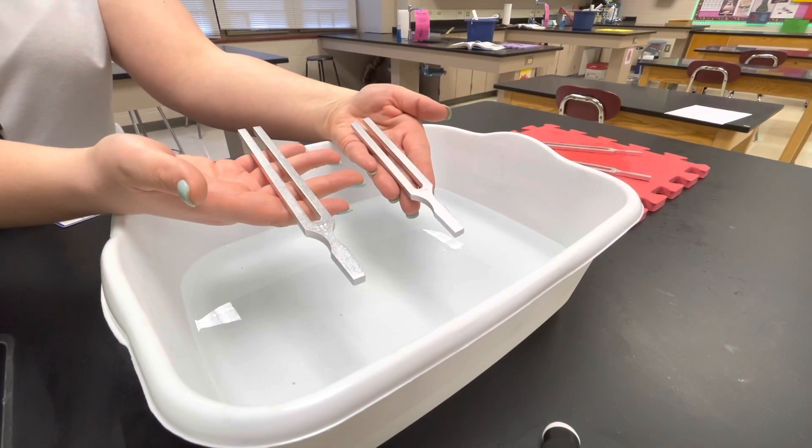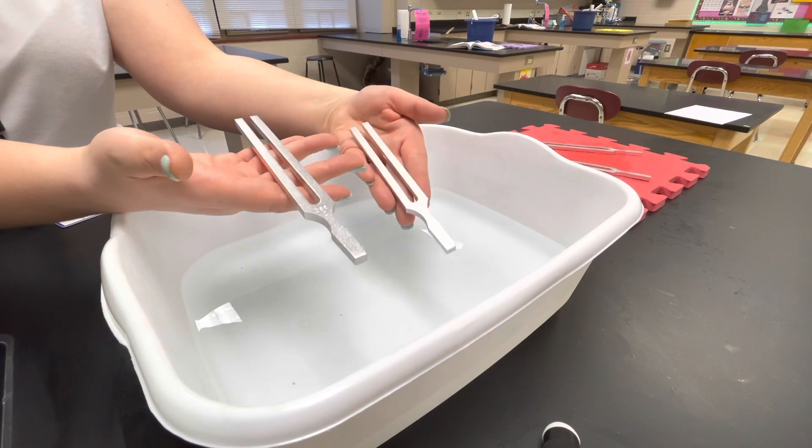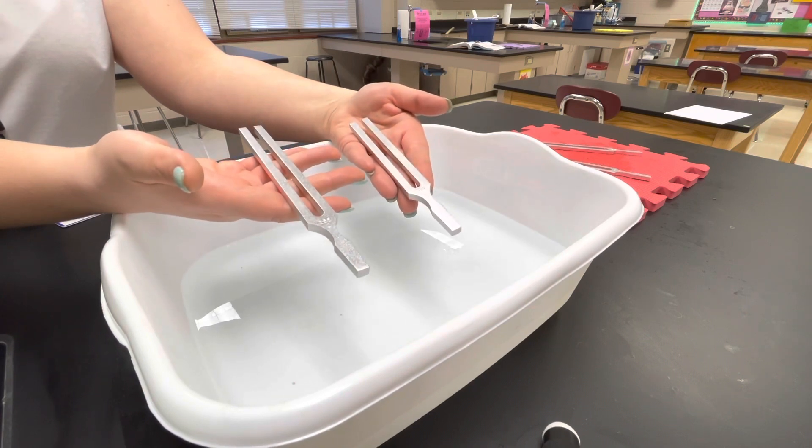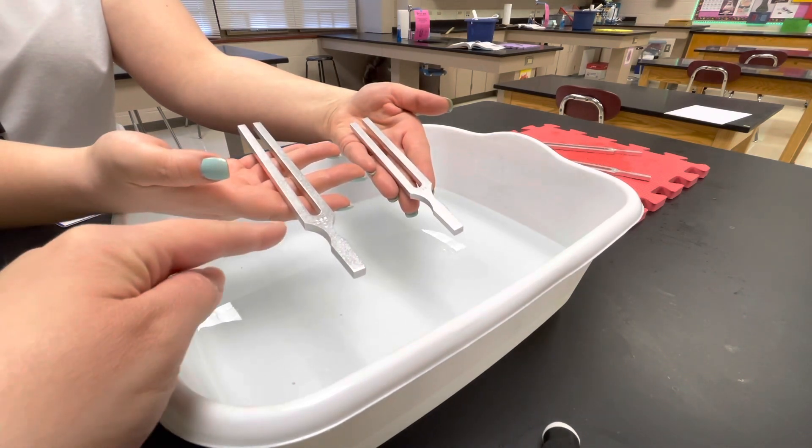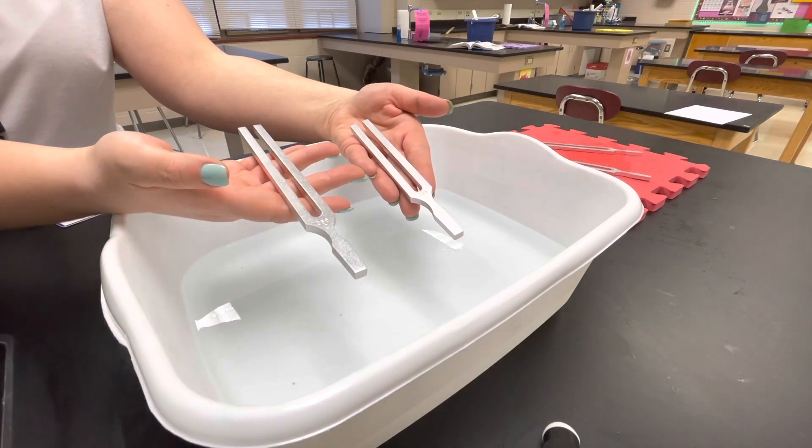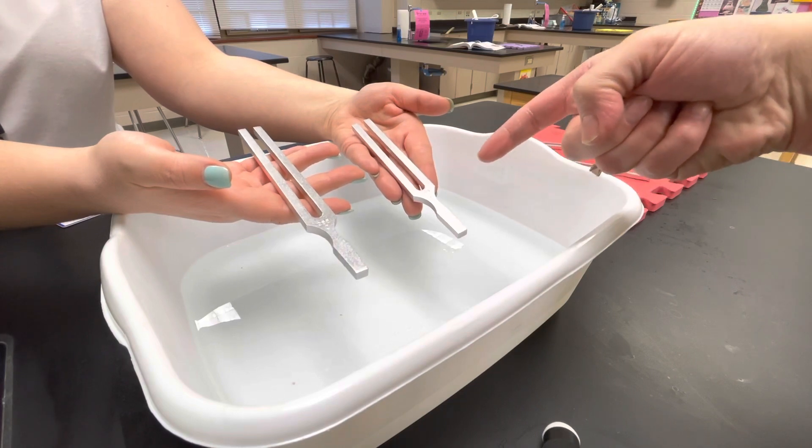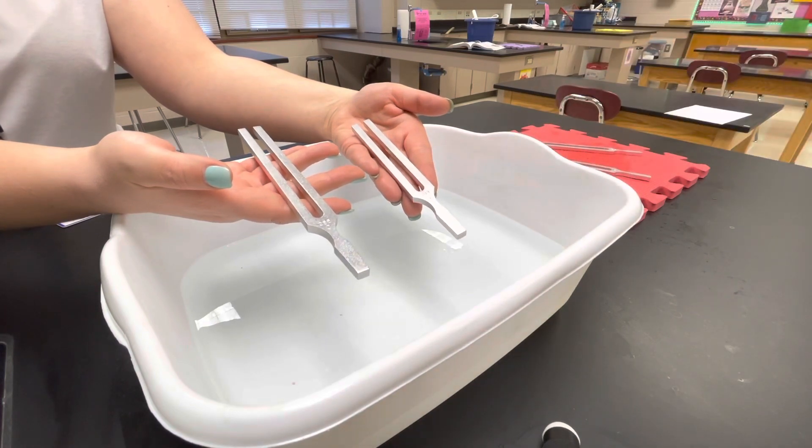In this portion of the lab we will be looking at sound frequency and energy. We have two tuning forks of different sizes and our first step is to record their frequency. Here we have the large tuning fork with a frequency of 256. Here we have the small tuning fork with a frequency of 384. Please make sure to record these numbers in the data table provided below.